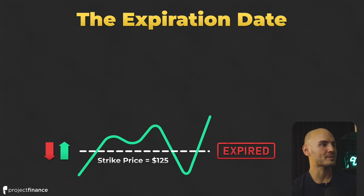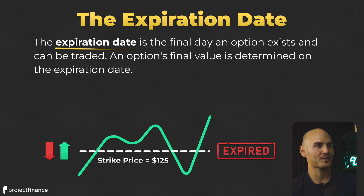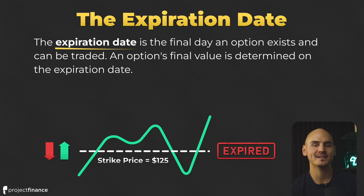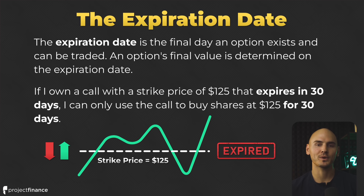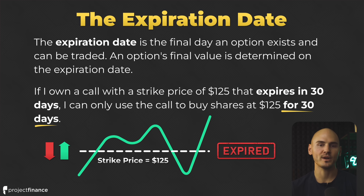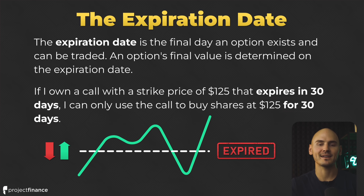All options have an expiration date — the final day an option exists and can be traded. An option's final value is determined on the expiration date. If I buy a call option with a strike price of $125 that expires in 30 days, I only get exposure to this call option's price changes over this 30-day window. When I buy or sell an option, I have to choose a time frame for which I think the stock is going to make a specific movement.